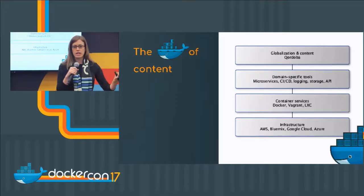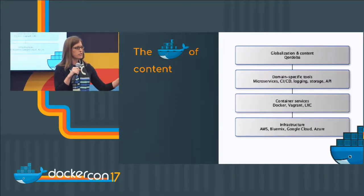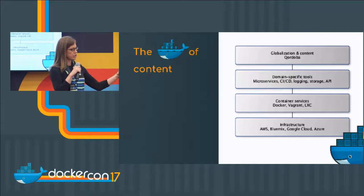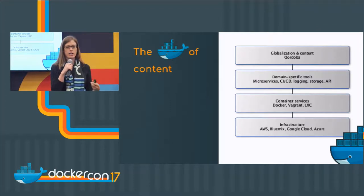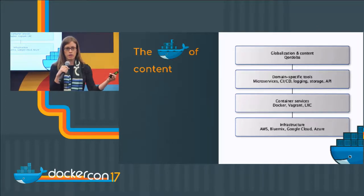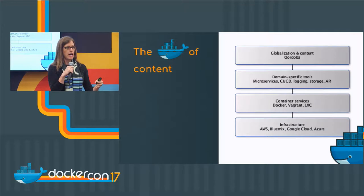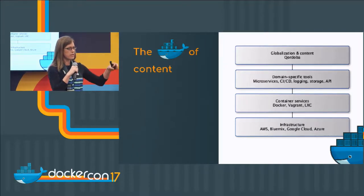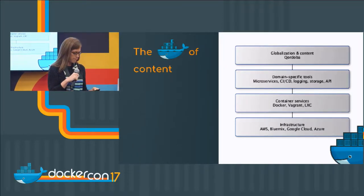This is just a diagram to illustrate that. The bottom layer is your bare metal. Above that, you have your Docker layer, your containers. Above that, you have your application logic, which is whatever product you're building. And then completely separate from that, that's your content layer. So that's what we're talking about today.